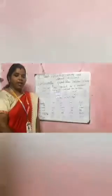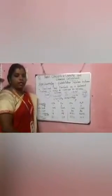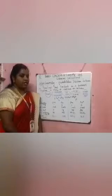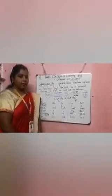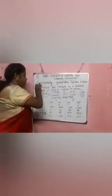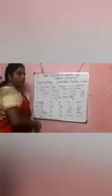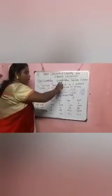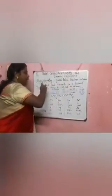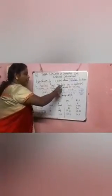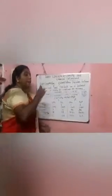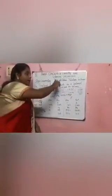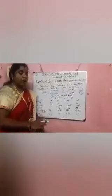Today, for the 11th standard, I am going to explain the topic: basic concepts of chemistry and chemical calculation. Under that, we have to see stoichiometry. Stoichiometry means a quantitative relation between the reactant and the product in a balanced equation — we have to find the quantitative relation of the chemical equation.